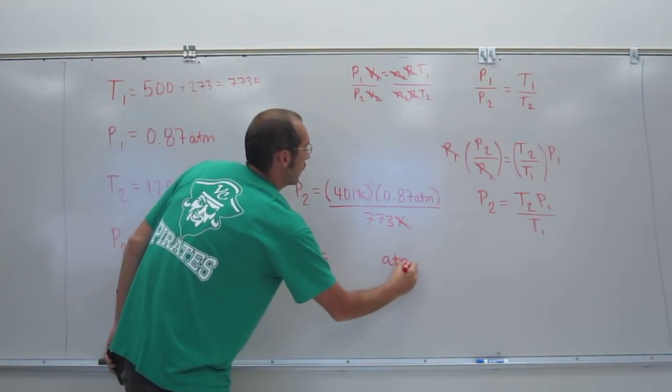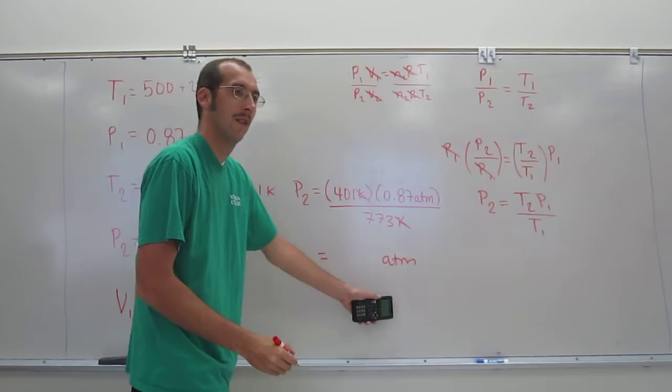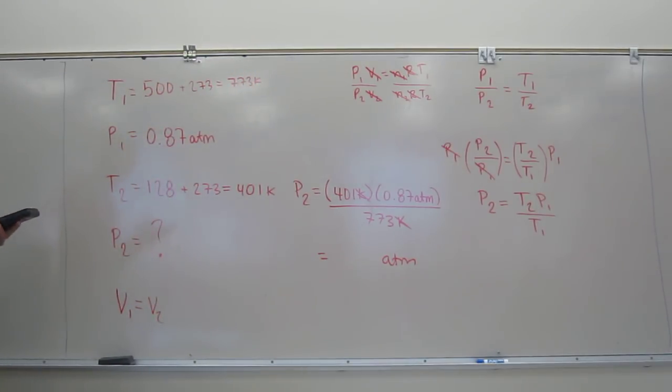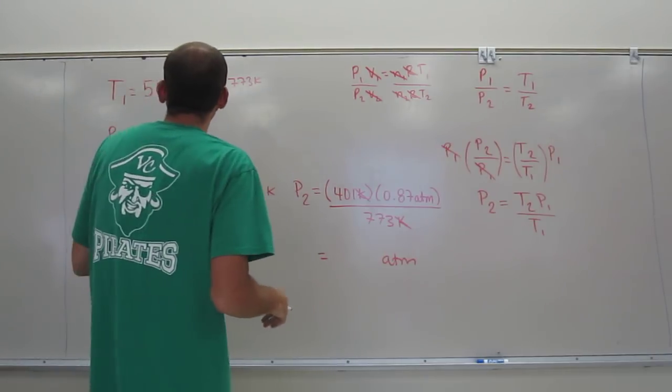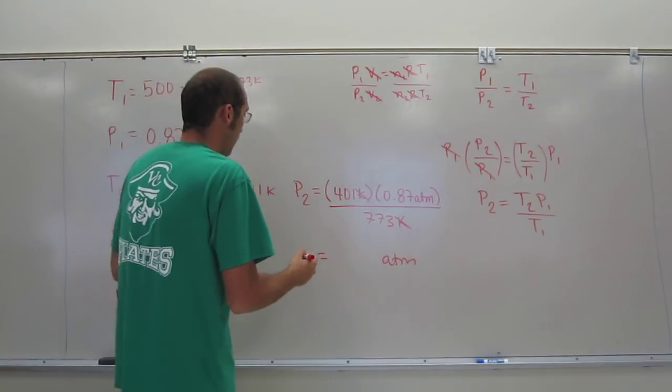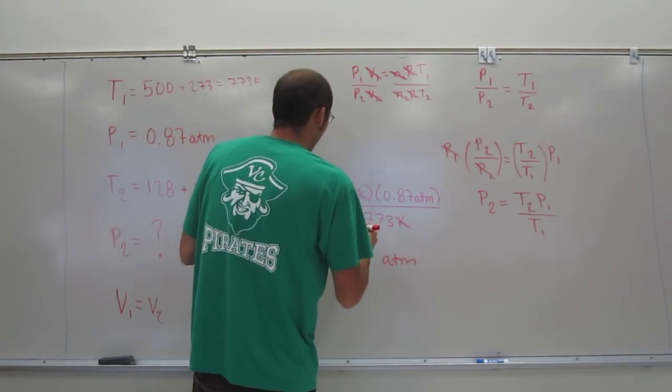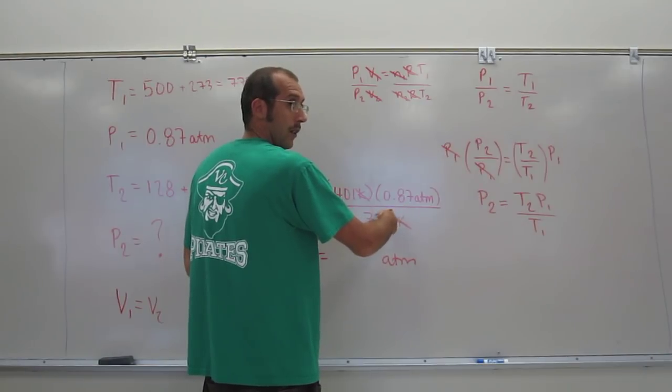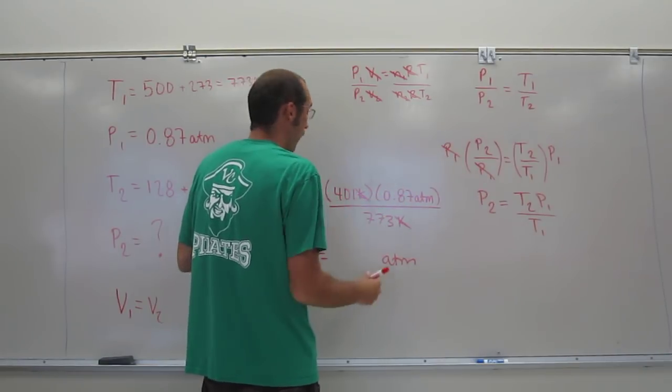Would you expect atm to be your unit? Yes. Because you're looking for pressure. So you want to always keep all that stuff in mind. So we've got 401 times 0.87, and then divide that by 773. Now remember, we thought it should be less. And in fact, it is, which is cool. And it should be two sig figs because this one is two sig figs.